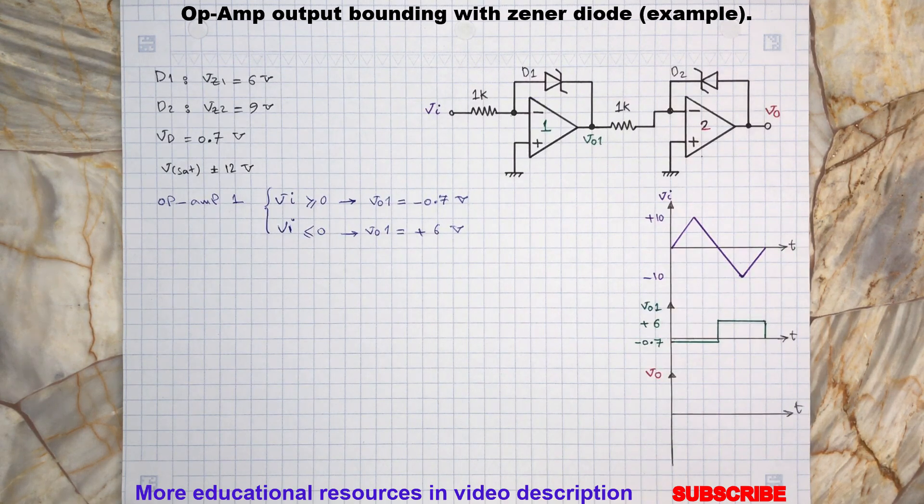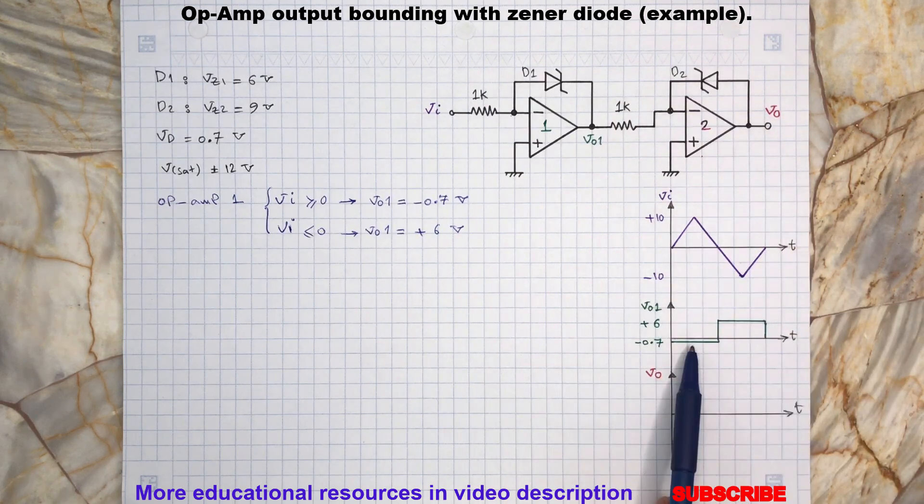Back to the video. Now we are going to determine the output of the second stage op-amp in respect to its input signal, which is V01. Here, negative 0.7 volts is applied to the non-inverting terminal V-.